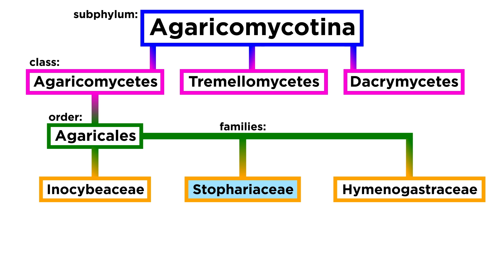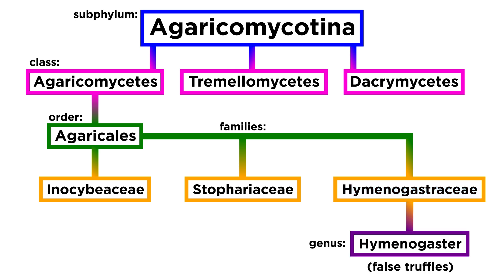Now that we have covered some of the diversity in the family Strophariaceae, let's move on to a genetically similar family, Hymenogastraceae. Originally, this family only housed species of false truffles from the genus Hymenogaster. However, since the addition of genetic analysis, some infamous gilled mushrooms have been moved to this family.